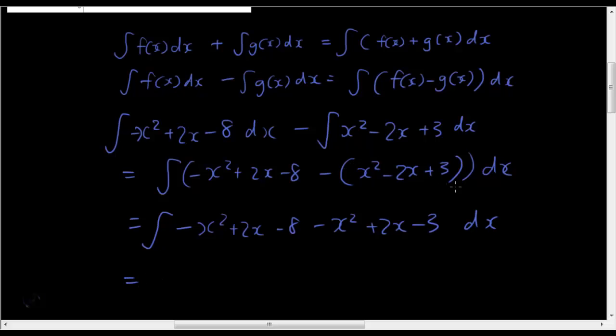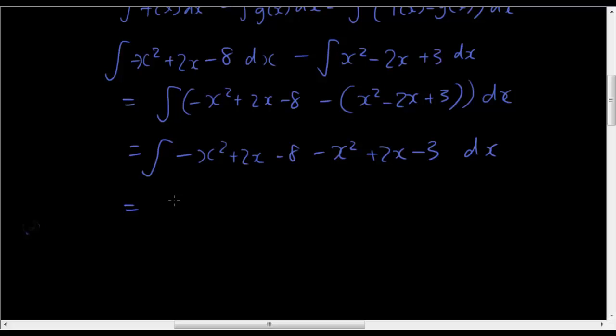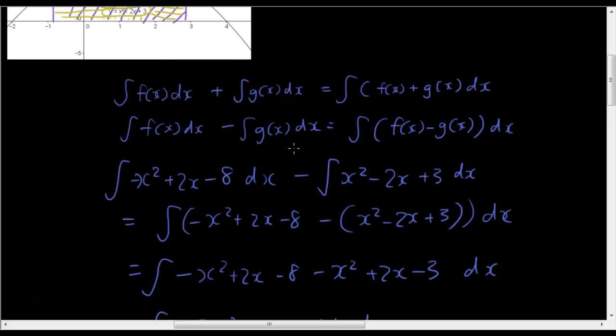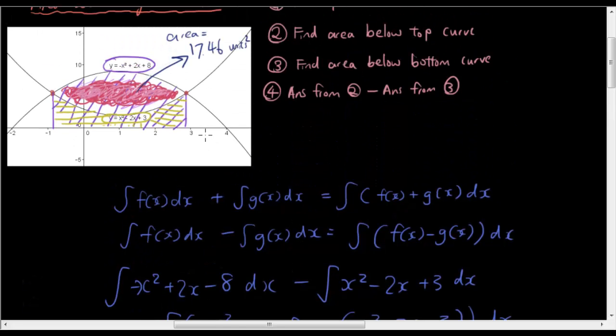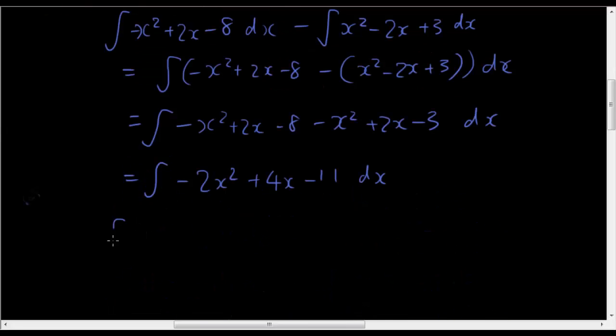All right, because I just expanded out this bracket here. And now this becomes integral of negative 2x squared plus 4x minus 11 dx. And once you have done that, because this is the difference of the two integrals, I can just get the definite integral from x is negative 0.87 to positive 2.87.